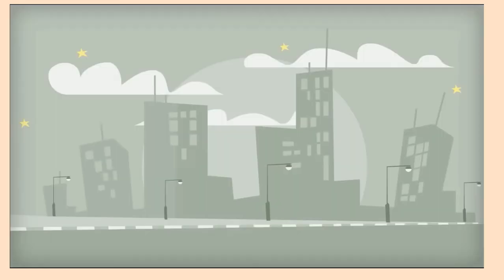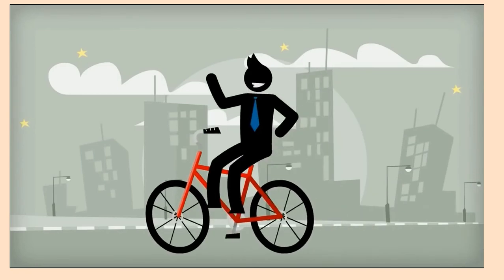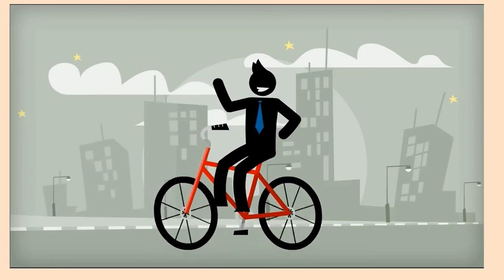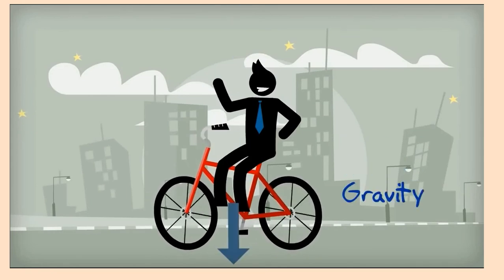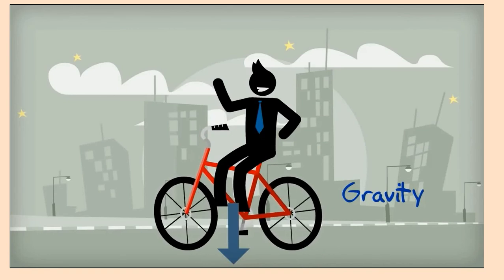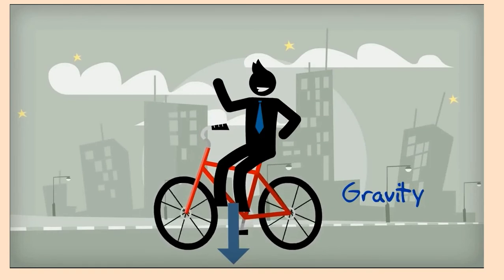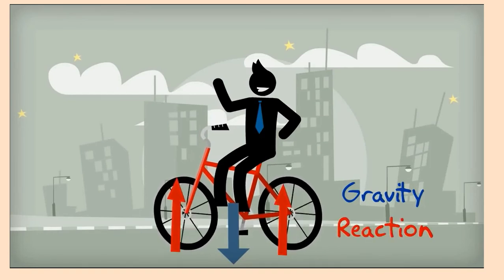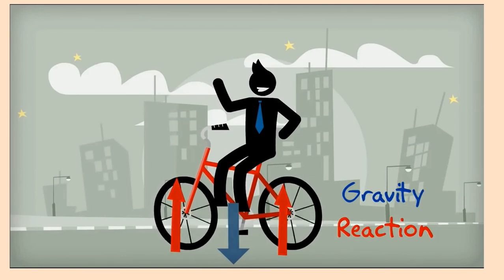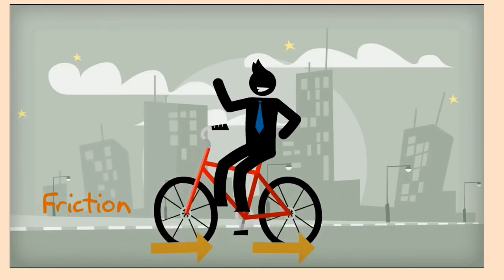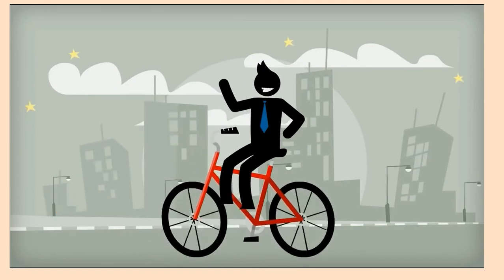A cyclist on a bicycle experiences the interaction of different forces. Gravity pulls the weight of the bicycle and the rider towards the earth, while an equal reaction force acts upwards to balance gravity. As he rides, the frictional force between the wheels of the bicycle and the ground acts against the forward force so he doesn't go too fast.